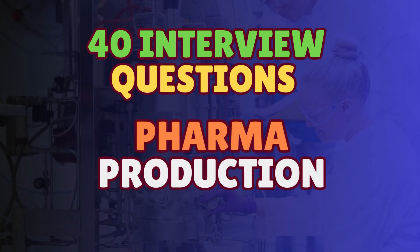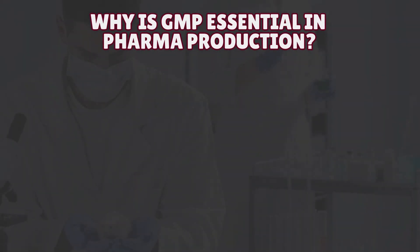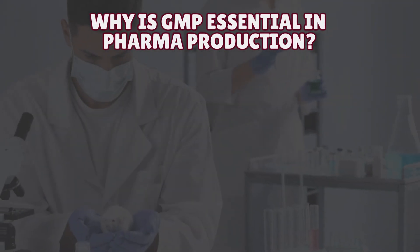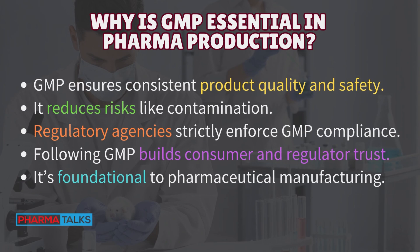40 Interview Questions with Concise Responses for Pharmaceutical Production. Key Principles in Pharmaceutical Production: Why is GMP essential in pharma production? GMP ensures consistent product quality and safety. It reduces risks like contamination. Regulatory agencies strictly enforce GMP compliance. Following GMP builds consumer and regulator trust.